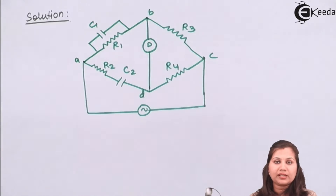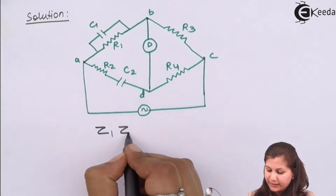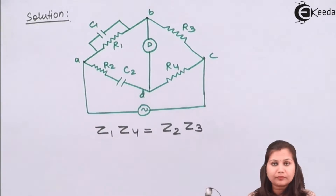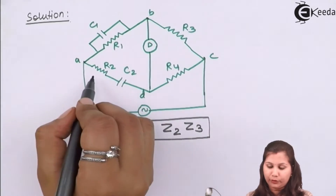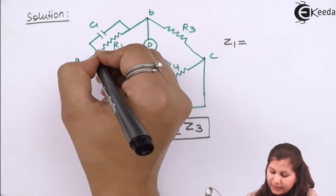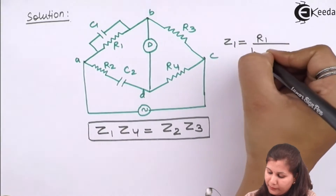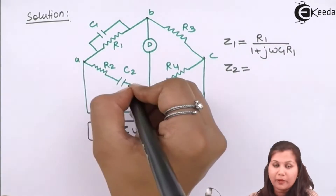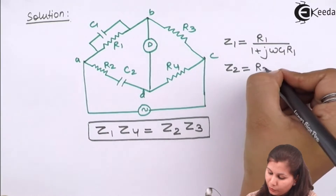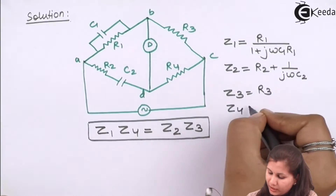When an AC bridge is under balance condition, the general balance equation is Z1·Z4 = Z2·Z3. Using this equation we will find the value of resistance R2. Z1 is the parallel combination of R1 and C1, which gives R1 / (1 + jωC1R1). Z2 is the series combination of R2 and C2, giving R2 + 1/(jωC2). Z3 is R3 and Z4 is R4.